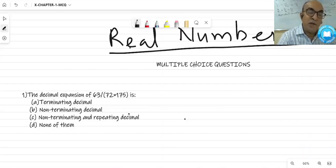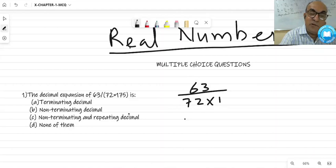The decimal expansion of 63 by 72 into 175. Whenever you want to know the decimal expansion or whether the given fraction will be terminating or non-terminating decimal, first step, you have to simplify the given fraction. So, 63 and 72, divide by 9. 9 times 7 is 63 and 9 times 8 is 72.